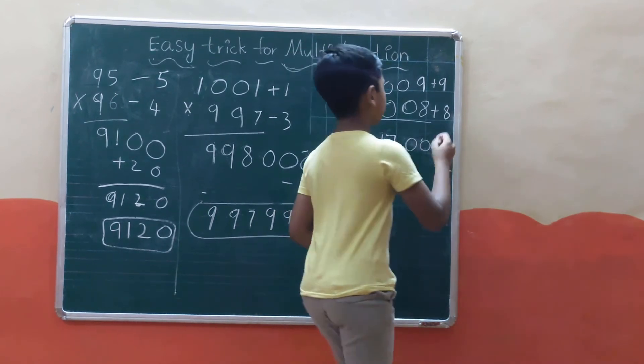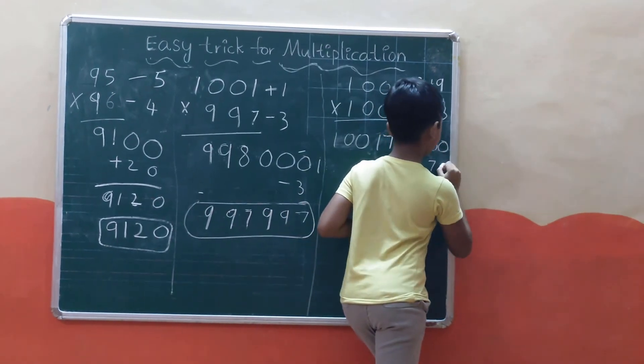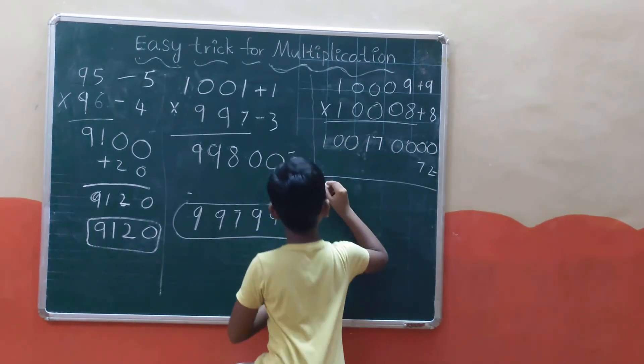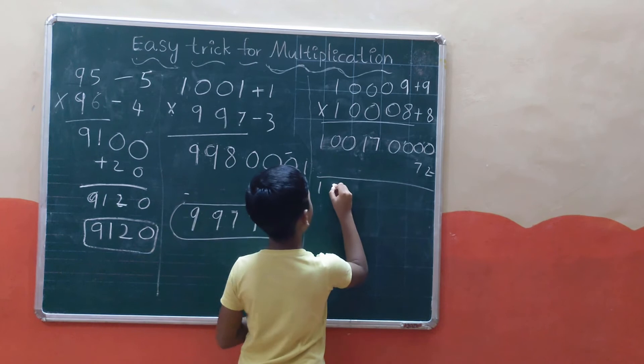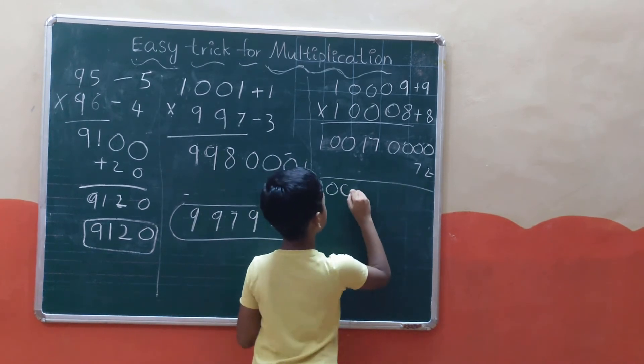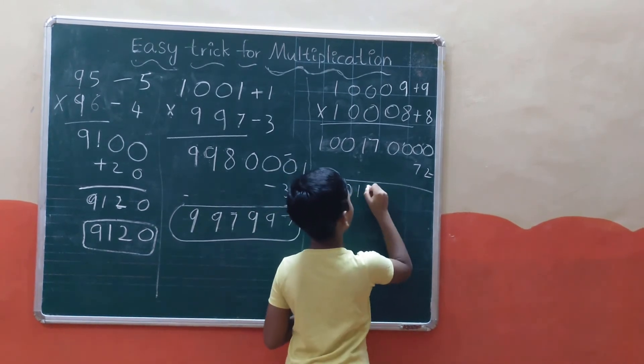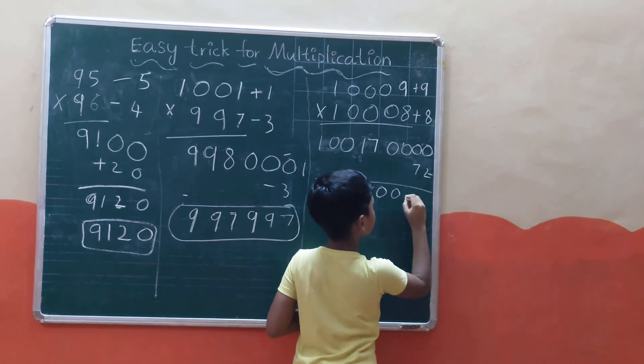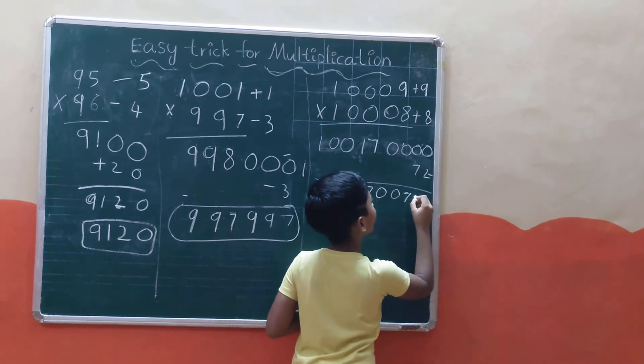Nine times eight equals 72. Then the answer is 100170072.